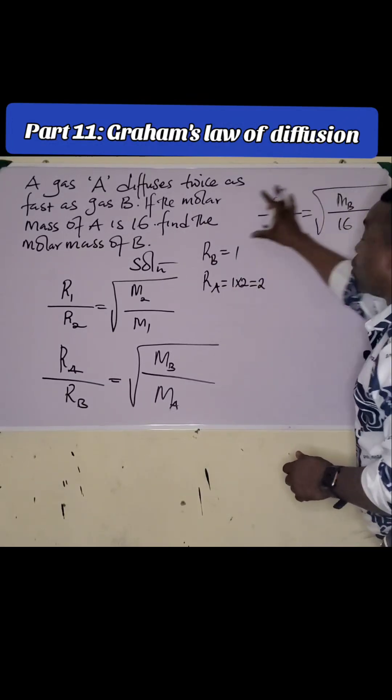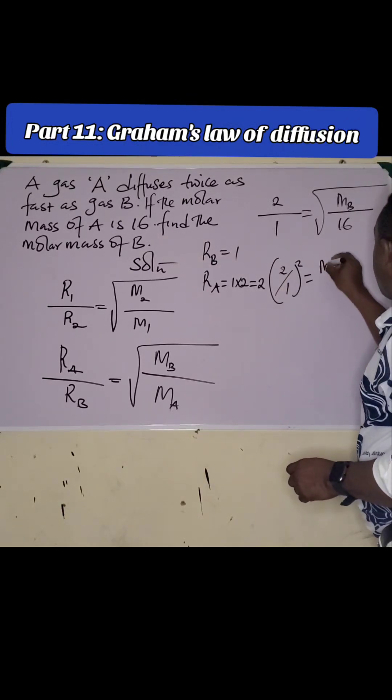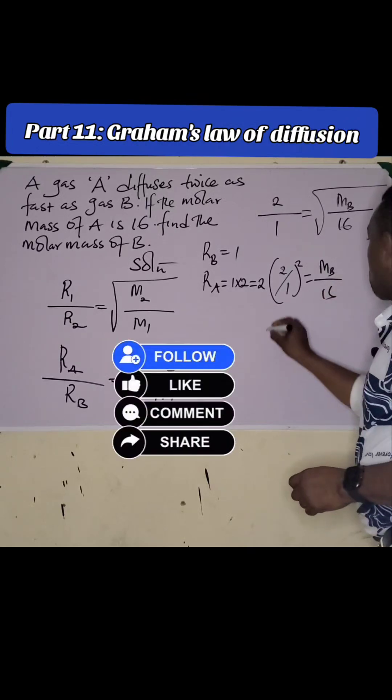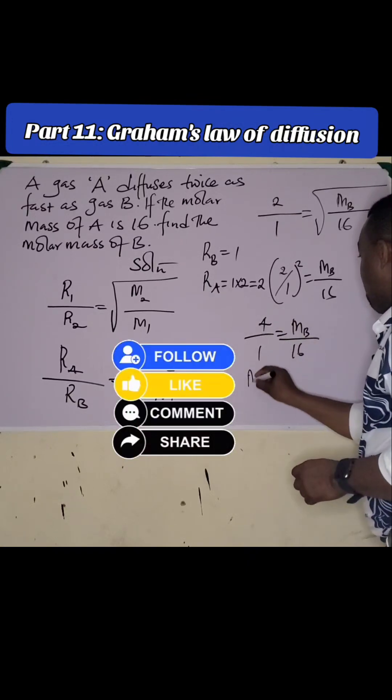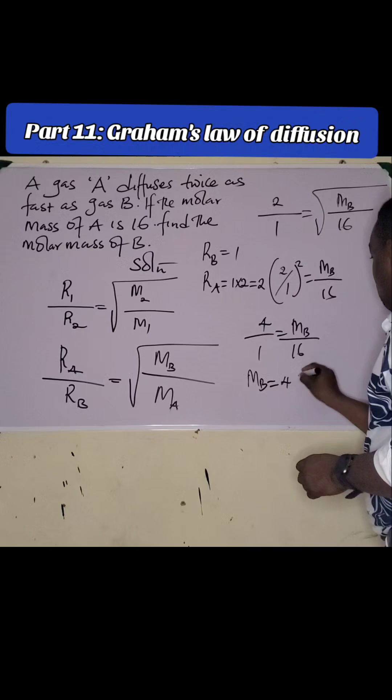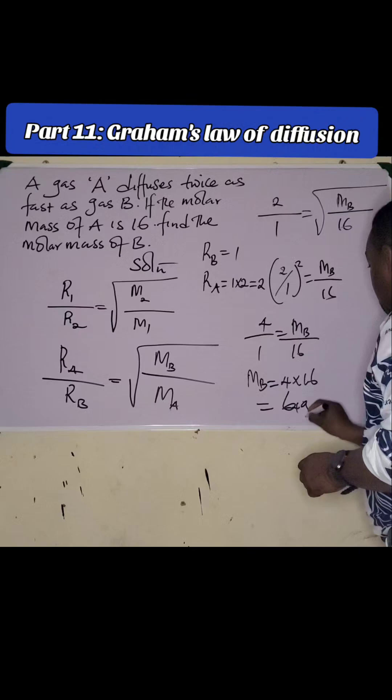To remove this square root, we square both sides. So we have 2 over 1, all squared is equal to MB over 16. So we have 4 over 1 is equal to MB over 16. So our MB, which is the molar mass of B, is 4 times 16, which is equal to 64 gram per mole.